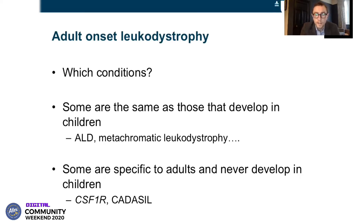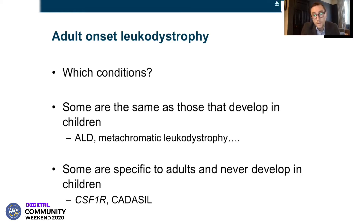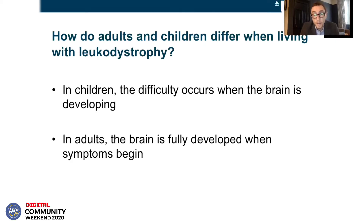So what conditions can present in adults with leukodystrophy? Some are just the same conditions that can develop in children — adrenal leukodystrophy and metachromatic leukodystrophy can both present in children and adults. But there are some conditions that really only present in adults, and that can be quite different. I'm going to talk about one of these today, which is CSF1R. As you would expect, adults and children with leukodystrophy will present differently and have different symptoms, because in children the difficulty occurs when the brain is in the developing state, whereas in adults the brain is fully developed when symptoms begin.